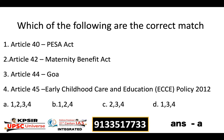Article 42 is related to the Maternity Benefit Act. Article 44 is about the Uniform Civil Code. Article 45 is about Early Childhood Care and Education — it is the duty of the state to provide early childhood care and education to children below the age of 6 years.